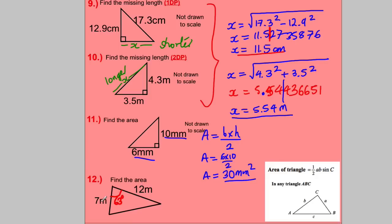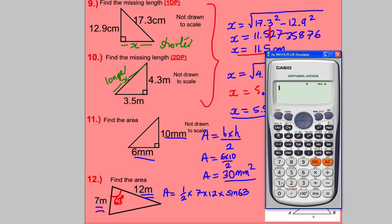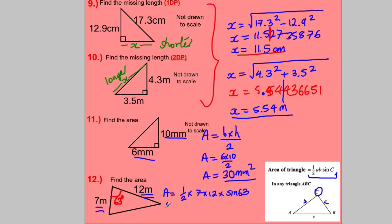For the last triangle, we don't have the base or perpendicular height — we have two sides and the angle between them. From the formula booklet: area = ½ × a × b × sin C. So we do ½ × 7 × 12 × sin 63°. The angle must be between the two sides. The answer is 37.4, so area ≈ 37.4 mm² — round as you see fit and tell the examiner you've rounded to one decimal place.